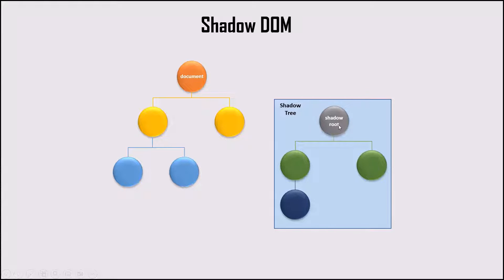The other part of the code will also be a DOM tree, which starts with a shadow root, and under that root any element can be attached. So the root of the Shadow DOM is called the Shadow Root. This element can contain other elements as we have in a regular DOM tree, and this DOM tree is called the Shadow Tree. This Shadow Tree or Shadow DOM is attached with one of the elements or nodes in the original document tree, and that node which contains a Shadow DOM is called the Shadow Host.